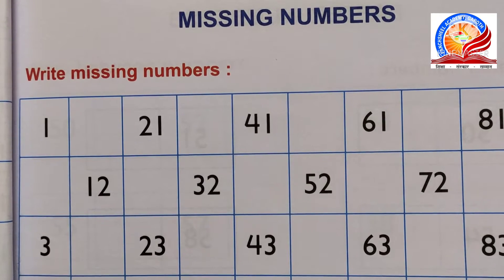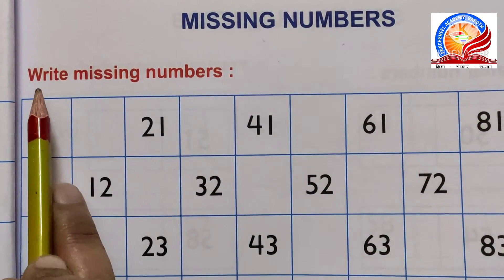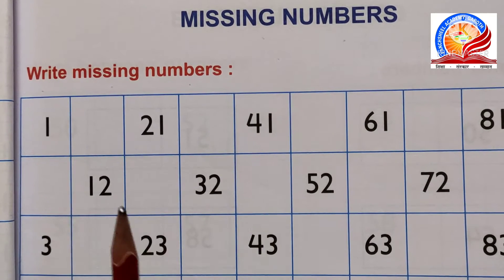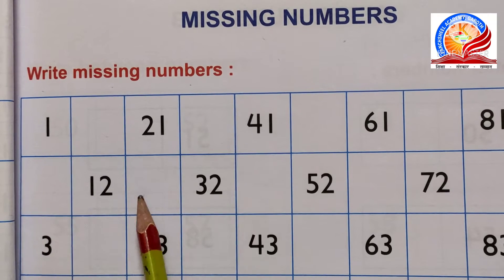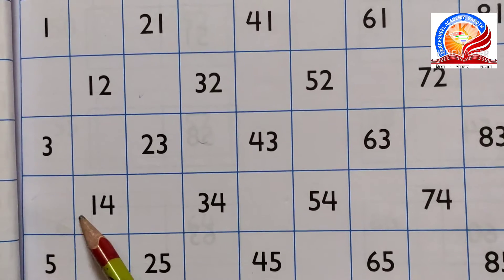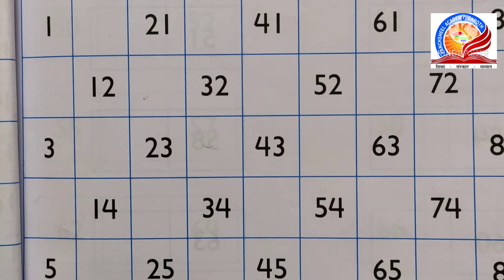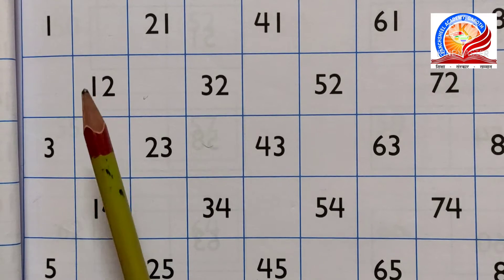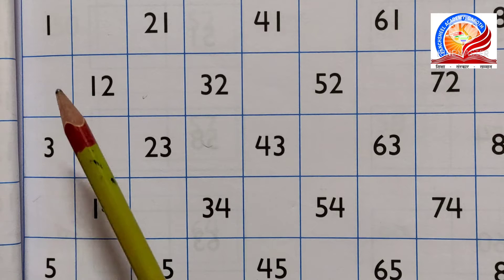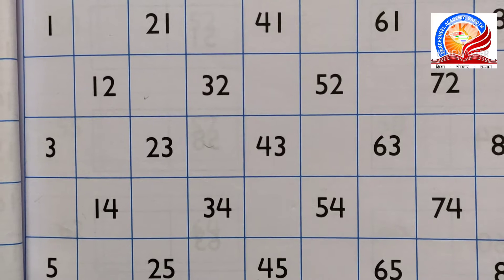Next, come to page number 23 - Missing numbers. Write missing numbers. Humein yahan par kuch numbers diye gaye hain, in numbers ke saath mein kuch blank boxes bhi diye gaye hain. Humein in numbers ko dekhna hai aur inke baad mein jo blank box hai, unhein fill up karna hai. Humein 1 se lekar 100 tak counting di gayi hai jisme kuch numbers hain aur kuch numbers nahi hain.